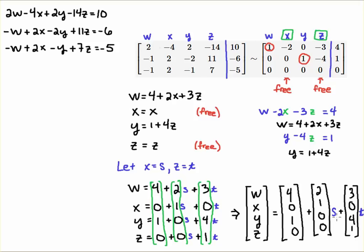And now you can see clearly, look, if you let S, which is our free parameter, if you let it be any value and you let T be any value, whatever values you let those variables be, then when you add this together in this linear combination, you'll get a value for W, X, Y, and Z that will satisfy the system.